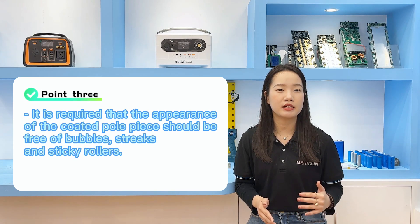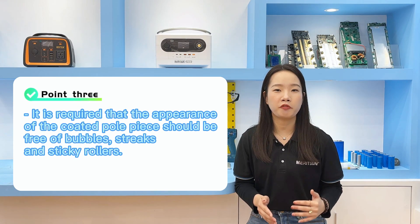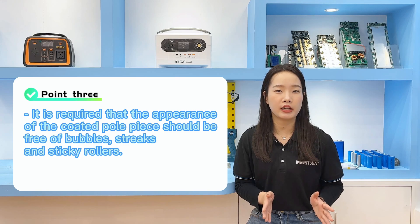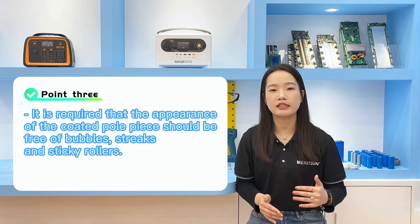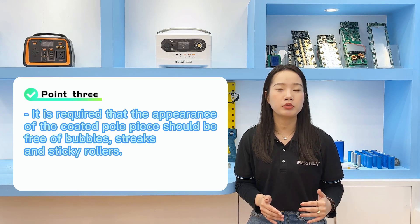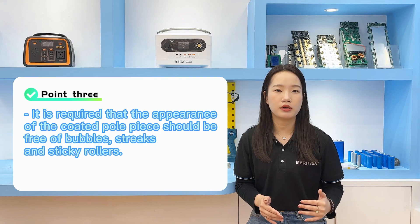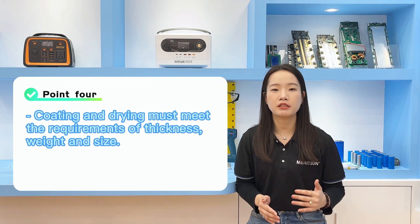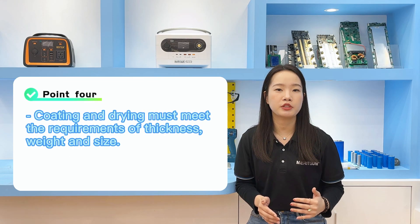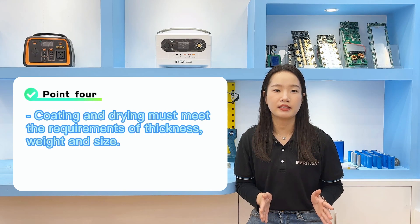Visually inspect the appearance of the coated electrodes; it is required that there are no bubbles, strips, or sticky rollers. The coating and drying must meet the requirements for thickness, size, and weight.